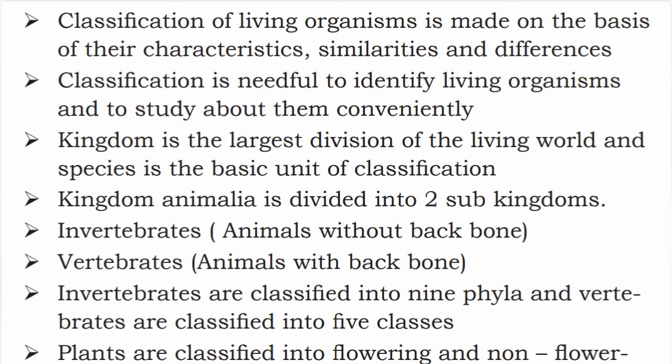Binomial nomenclature is a universal system of naming organisms. It contains two names — 'bi' meaning two, 'nomial' meaning names. The first name is the genus name, written with a capital letter, and the second name is the species name, written with a small letter.